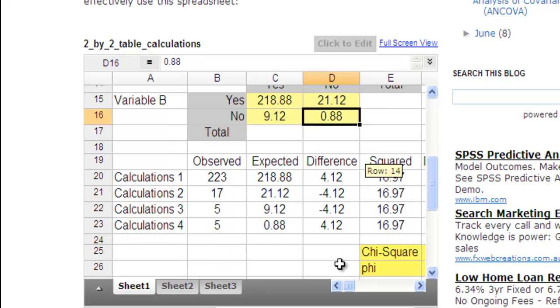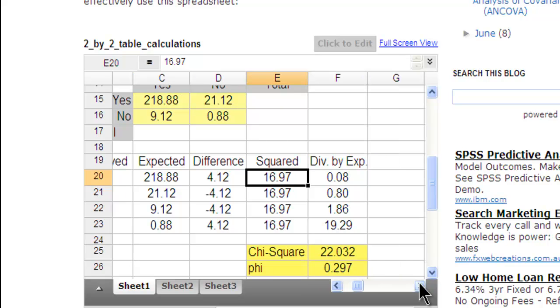Then it does all the calculations for the difference between observed and expected. And then that value is squared, and then it divides it by the expected frequencies. So it does all the calculations. I've also got another video where I go through the calculations in basically like a lecture format, which is a very simple way of all the calculations involved in performing a 2x2 table analysis.